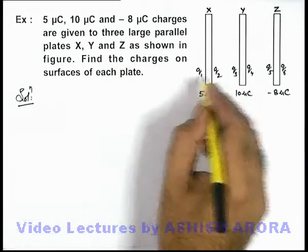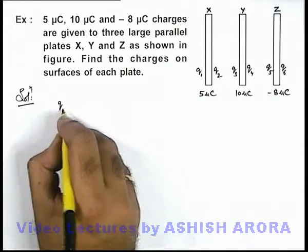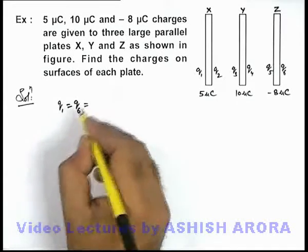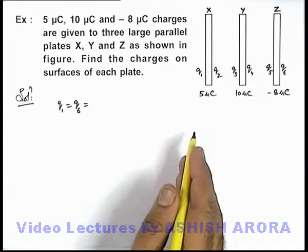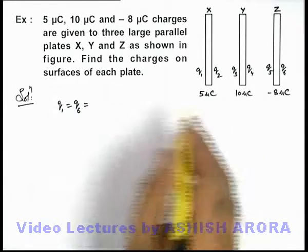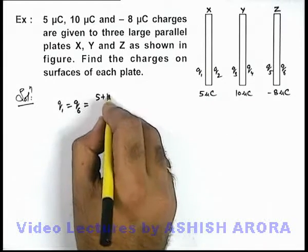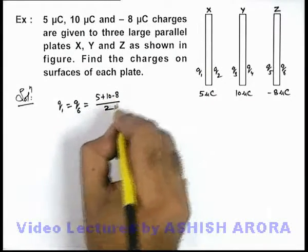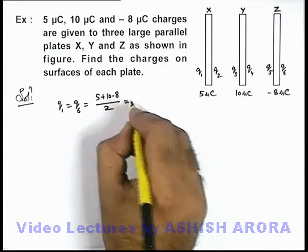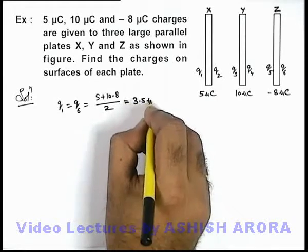That on the outer surfaces the charges are q1 and q6 which must be equal, and these should be half of the total charge of the system. So this can be written as 5 plus 10 minus 8 by 2, and here this will be 3.5 micro coulomb positive.